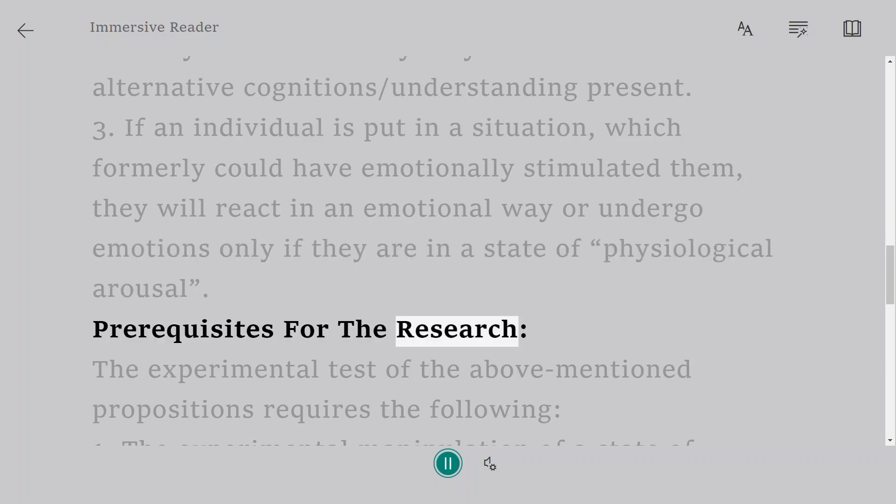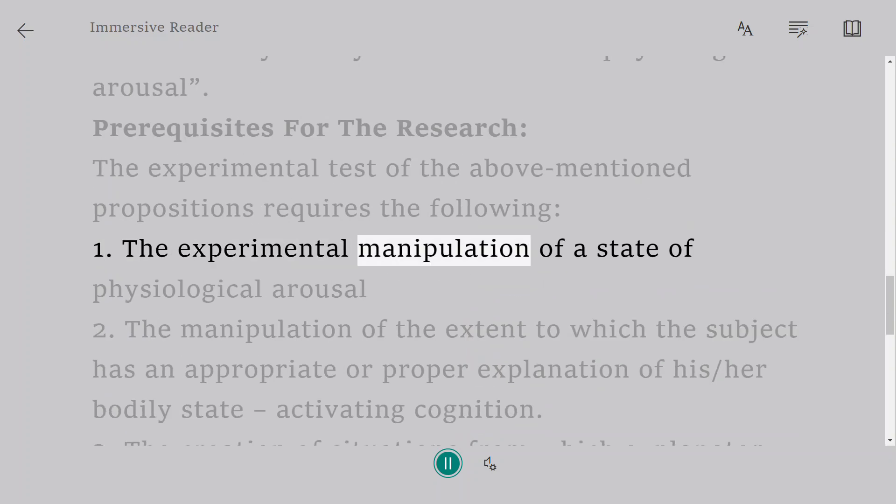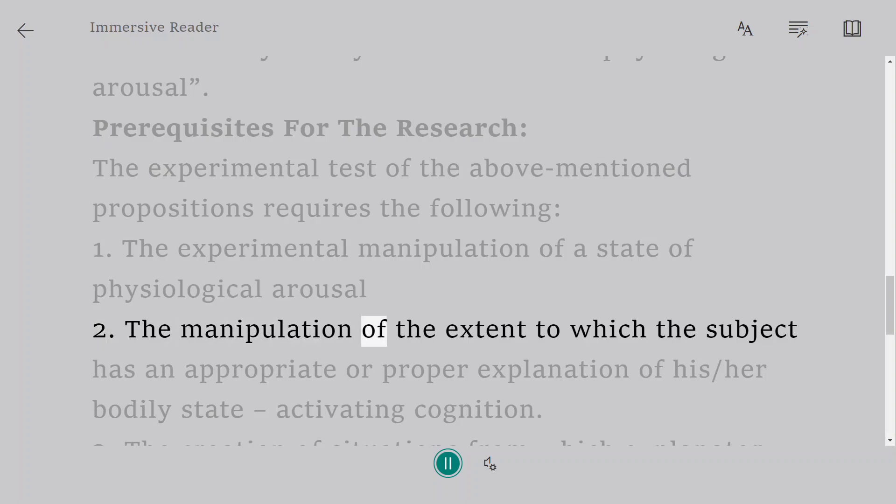Prerequisites for the research: The experimental test of the above-mentioned propositions requires the following: 1. The experimental manipulation of a state of physiological arousal. 2. The manipulation of the extent to which the subject has an appropriate or proper explanation of his/her bodily state - activating cognition.